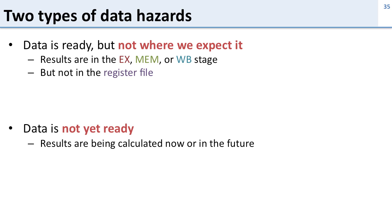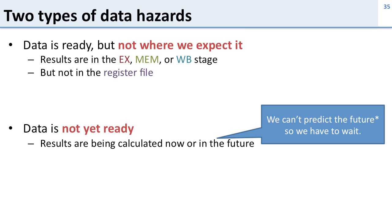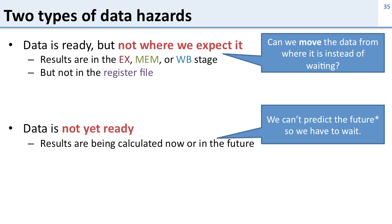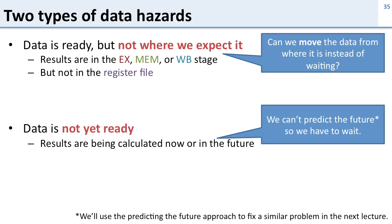If we look at these two types of data hazards, we can't really do much for the one where the data isn't ready yet, because we can't predict the future — we don't know what the result is going to be. But for the one where the data is not where we expect it, we have an opportunity. We can move the data from wherever it is to where we want it instead of waiting, and that's what forwarding is. Take a look in the next lecture and you'll see how we actually try to predict the future to solve some of those other problems.